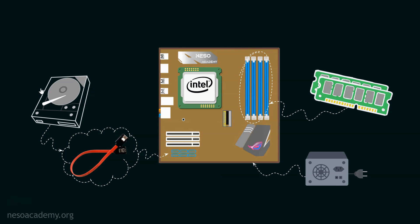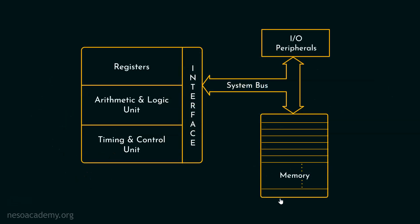That was a very detailed view of the components within the computer. Let's use a simple view to understand the organization even better. We have three different components and a system bus. Starting with the first one — the I/O peripherals — these are all the input-output devices put together. Next, we have the memory, which refers to the main memory. Auxiliary storages fall under the I/O peripherals as well, because the way input-output devices are interfaced with the computer system is the same way auxiliary storages are also interfaced.